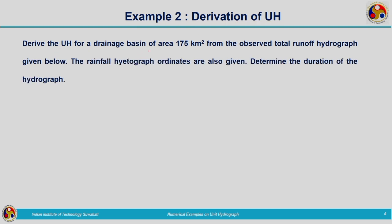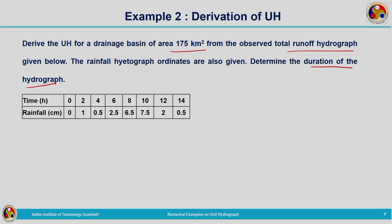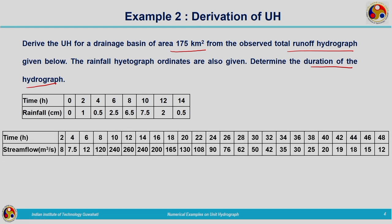Derive the unit hydrograph for a drainage basin of area 175 km² from the observed total runoff hydrograph given. The rainfall hydrograph coordinates are also given; determine the duration of the hydrograph. The runoff data is given from 2 hours to 48 hours, with stream flow varying from 8 m³/s to 12 m³/s — it does not start from zero.